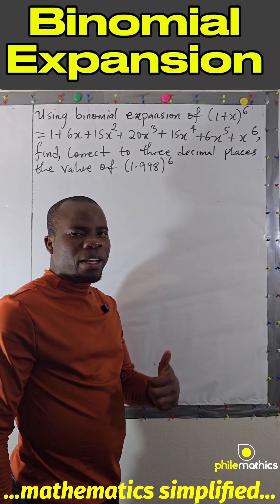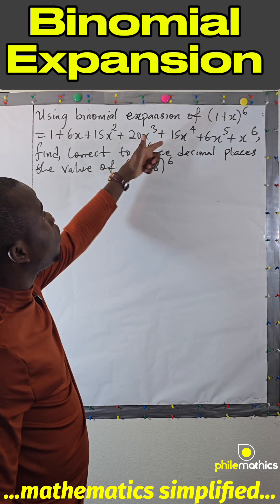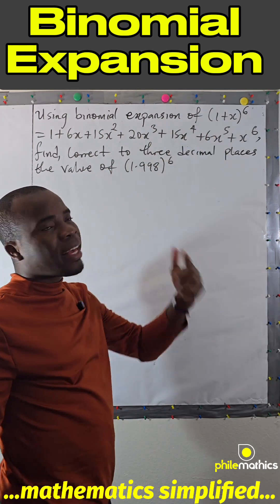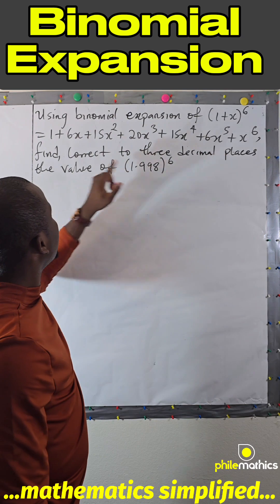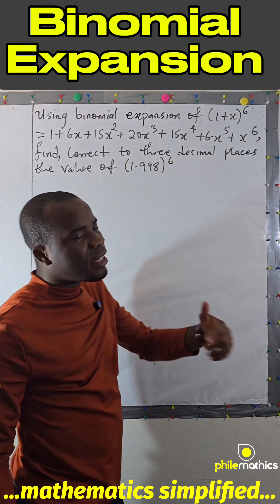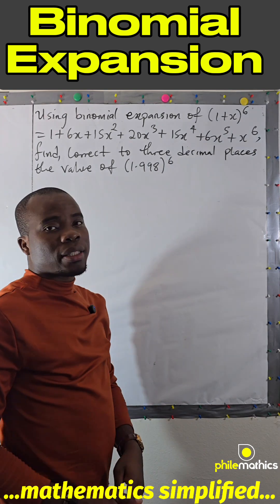This is a binomial expansion problem that says use the binomial expansion of (1+x)⁶ to find, correct to three decimal places, the value of (1.998)⁶.